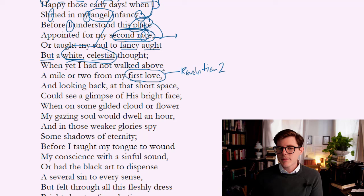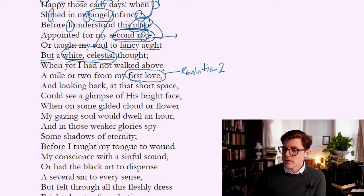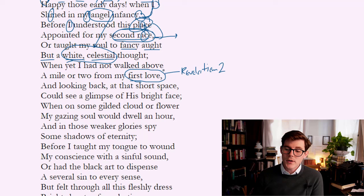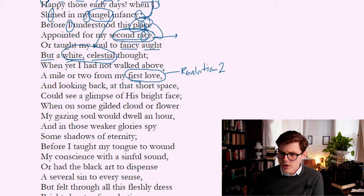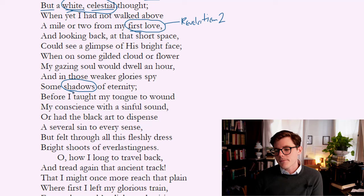This could be describing childhood, and I think it quite possibly is, instead of a preexistent state. The white, celestial, angelic infancy may refer to literal infancy, his childhood. Because this poem is so often read alongside Wordsworth's Intimations Ode, which imports some of the same sensibilities, it's often taken to mean a preexistent state. But Vaughn could simply be speaking of childhood, which was a favored state among the Caroline poets — Thomas Traherne, Henry Vaughn, a little bit of George Herbert as well. Looking back at that short space, 'could see a glimpse of his bright face. When on some gilded cloud or flower my gazing soul would dwell an hour, and in those weaker glories spy some shadows of eternity.'